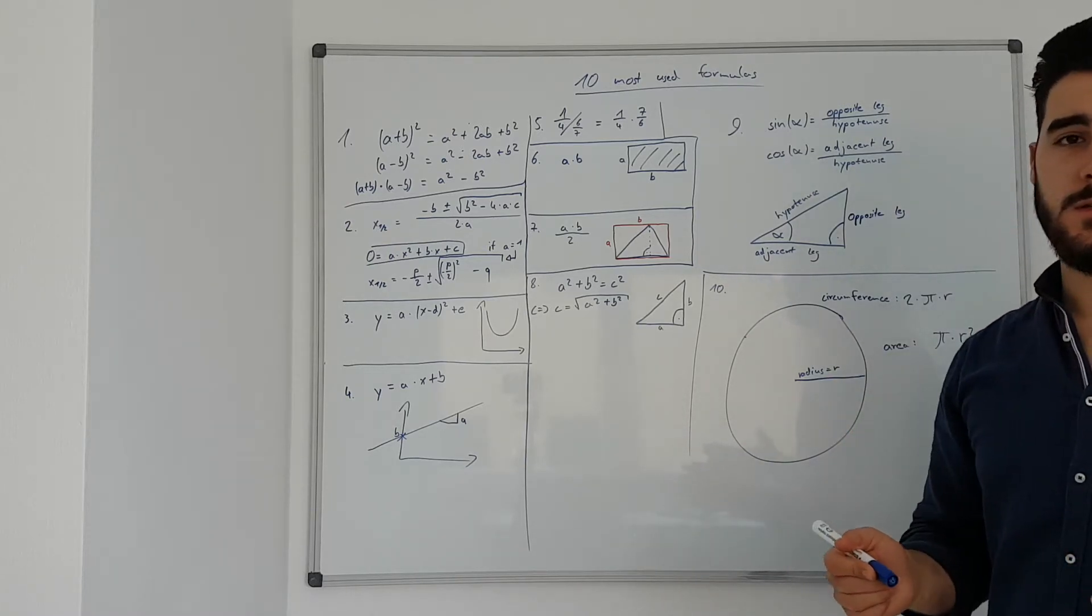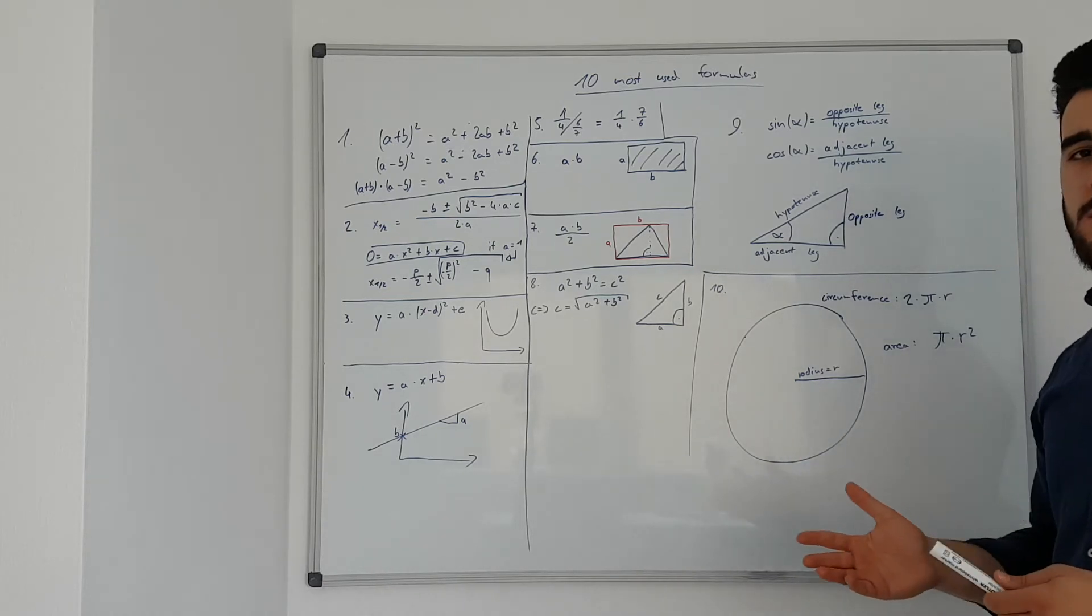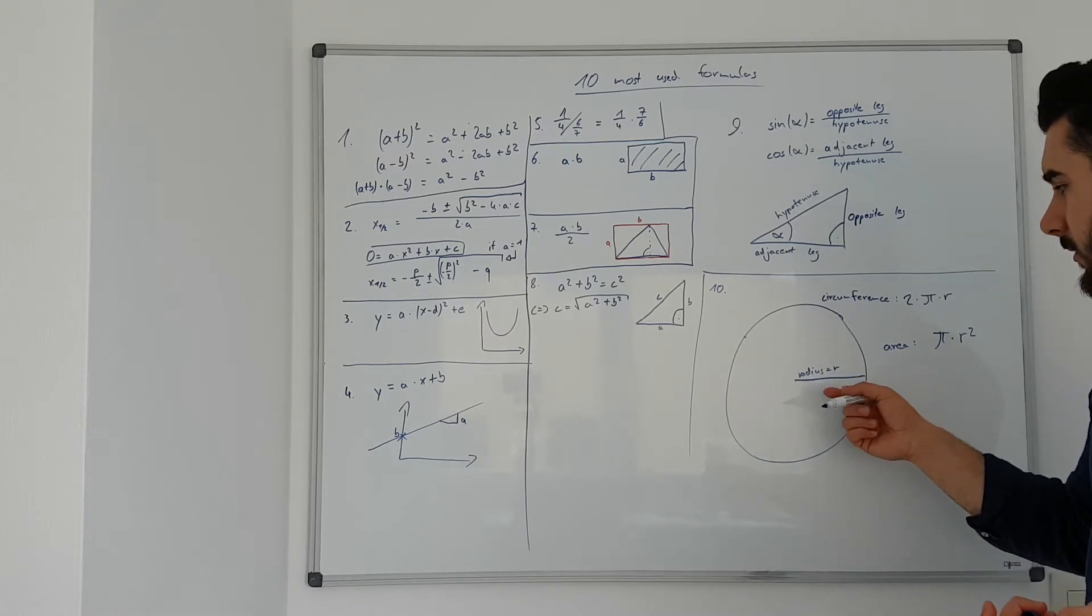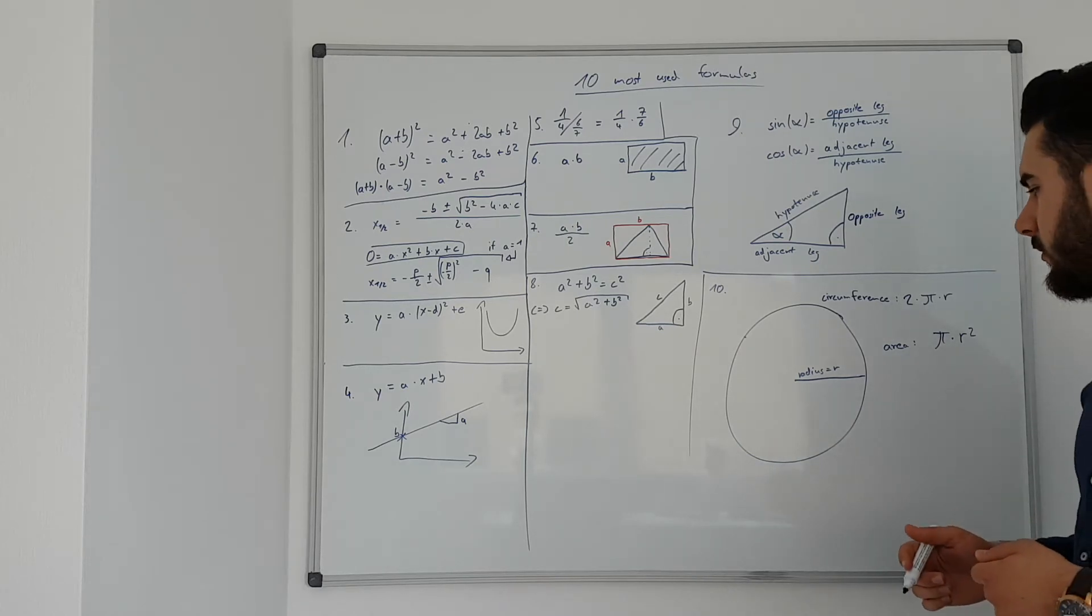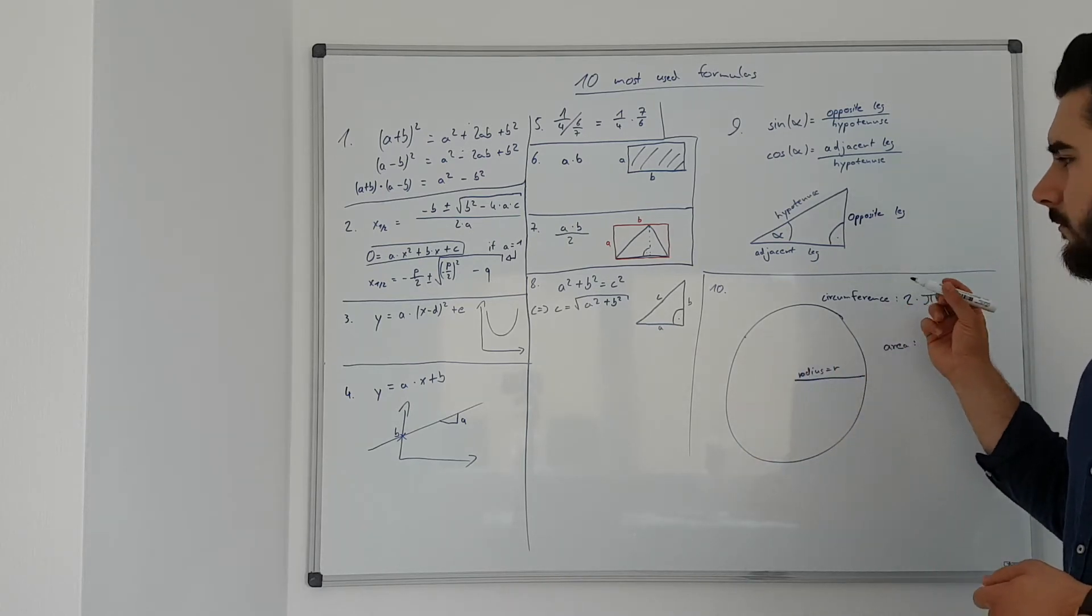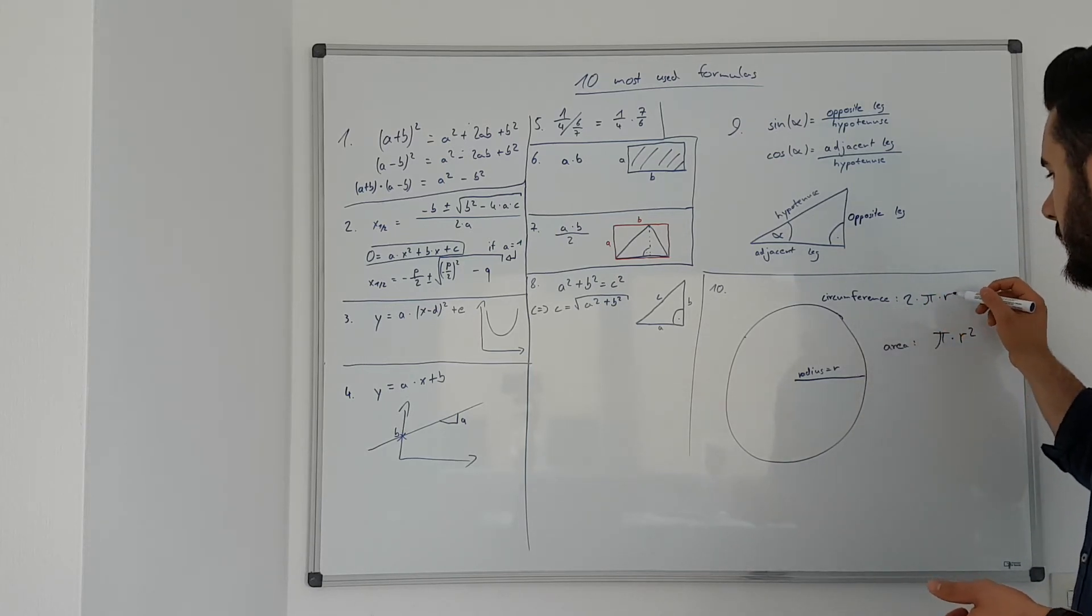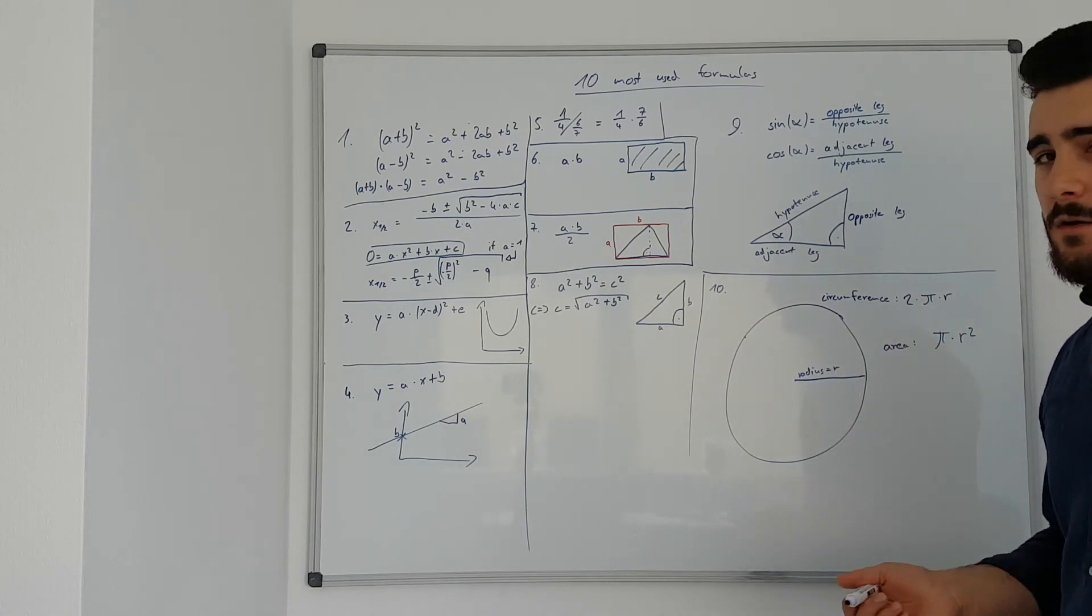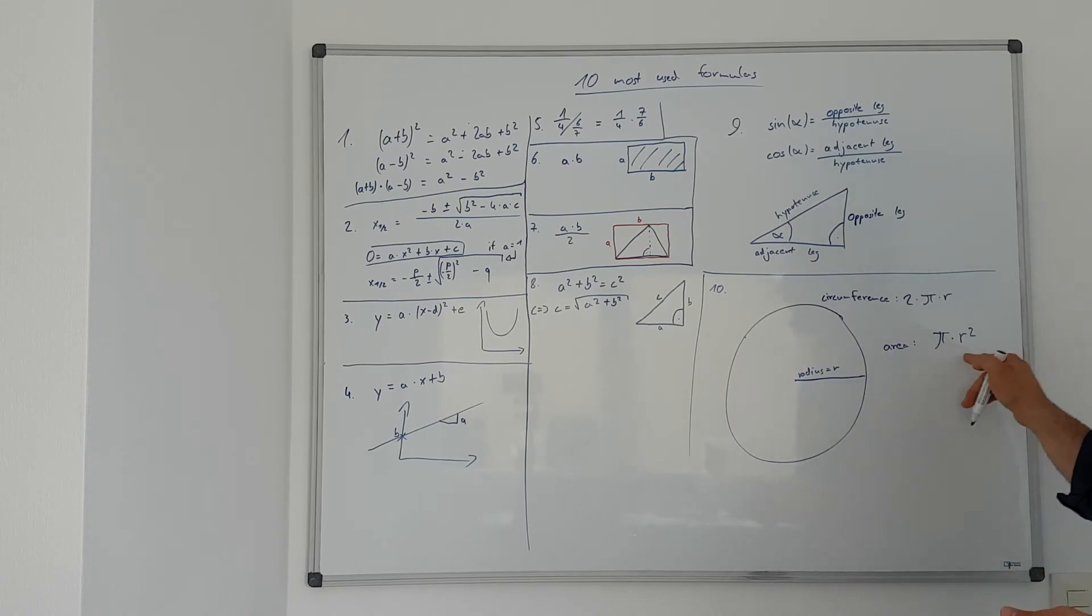Last but not least, to cover all basic forms, we're talking about the circle. So the most important thing about a circle, it has the radius, which is equal to r. This is like the most common way to name it. What else can you calculate on the circle? You can calculate the circumference, so it's 2 times pi times r. And if you want to calculate the area, again, you have to use pi, and you calculate pi times r squared.